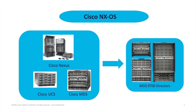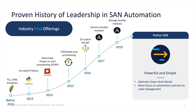NXOS is a modular operating system that allows just the needed code to be executed in your environment. If you're running OSPF, for example, there is no need for code related to EIGRP or BGP to be running on the system. This adds to the stability, scalability, and security of the system.